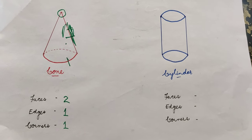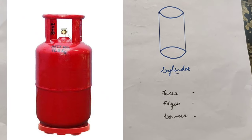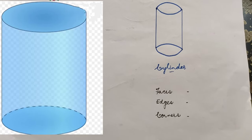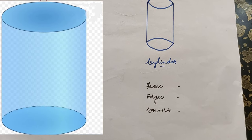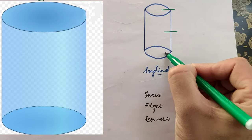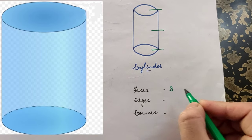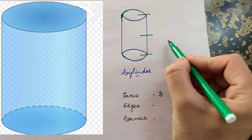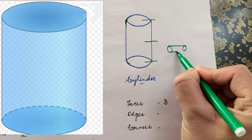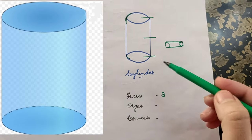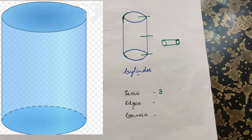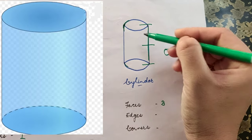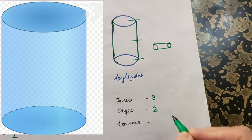Now the cylinder. An example of a cylinder is the gas cylinder in your house. Looking at a cylinder, how many faces? Three faces — one face we see on the side, and a second and third face. The sides of the cylinder are circular. We can see two circular faces and one rectangular face. How many edges? You can see two edges here, so we write two edges.